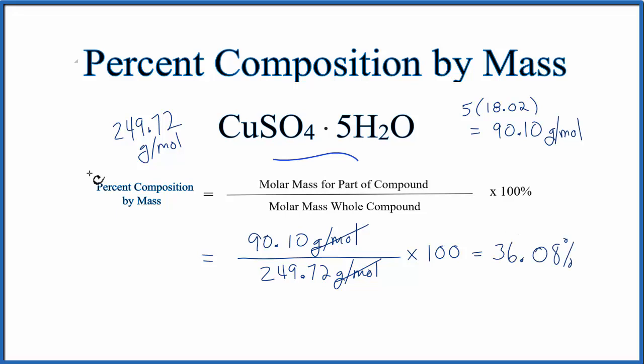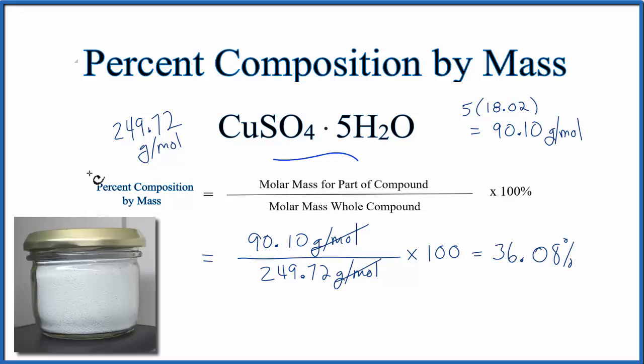Oftentimes in chemistry classrooms, they'll have you heat up copper sulfate pentahydrate, and that'll drive all the water off and just leave you with CuSO4, which is just a white powder. And of course, it's lost quite a bit of mass.